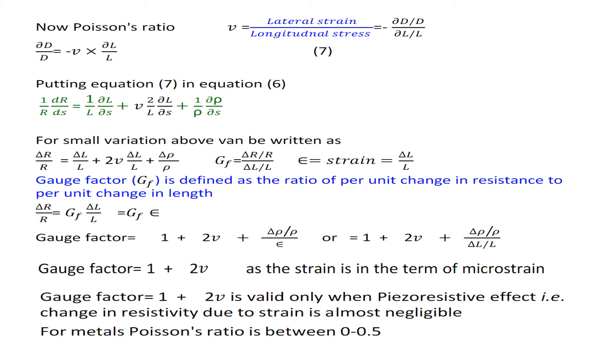This factor we know that ΔR/R / ΔL/L, so this is the ratio of variation in resistance and variation of ΔL. This is gauge factor and ε means strain = ΔL/L. Gauge factor GF is defined as the ratio per unit change in resistance to per unit change in length. ΔR/R = GF × ΔL/L = (1 + 2ν + Δρ/ρ / ΔL/L).